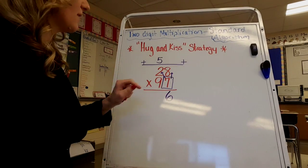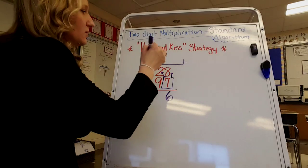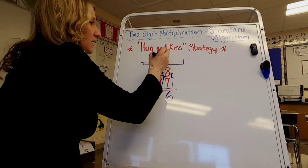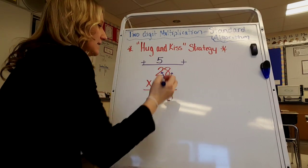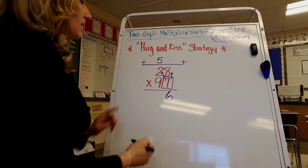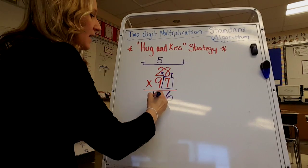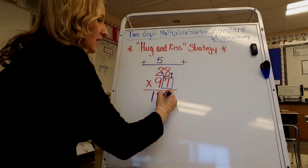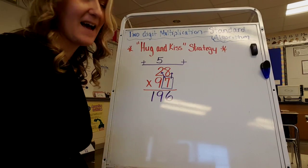So 7 times 2 is 14 plus 5. If you need your touch math, you do 14, 15, 16, 17, 18, 19. Because there are no other numbers to multiply, I can write the entire answer underneath the line.